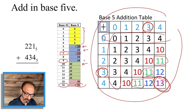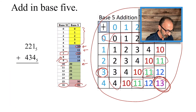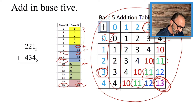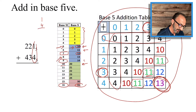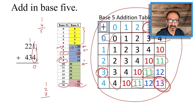Looking at the last entry: 13 — that's 4 and 4. 4 plus 4 is 8, and 8 is 1 five and 3 units, so it's written as 13. Now we're ready to add. First column: 1 plus 4 is 5, but we can't write 5 in base 5 — 5 is written as 1 0, so we write 0 and carry the 1. Second column: 2 plus 3 is 6, and 6 is 1 five and 1 unit, so we write 1 and carry the 1.